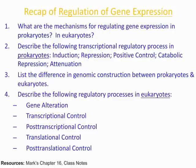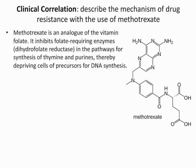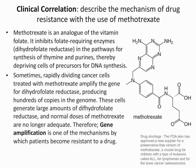Here's a recap of the learning objectives — number four is the longest so pay attention to that most. The clinical correlation describes the mechanism of drug resistance using methotrexate, an anti-cancer drug. It works by inhibiting dihydrofolate reductase, which cancer cells need for DNA synthesis. However, in rapidly dividing cancer cells, methotrexate can actually amplify the dihydrofolate reductase gene, having an opposite effect and causing resistance to the drug.